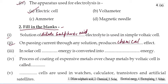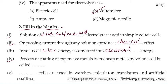In a solar cell, solar energy is converted into electrical energy. Fourth blank: the process of coating an expensive metal over a cheap metal by voltaic cell is called electroplating. Fifth, the voltaic cell is also called a voltameter — it is a voltaic cell.